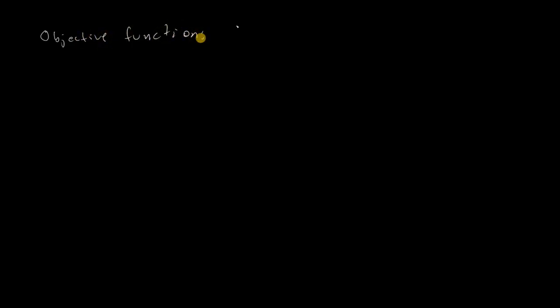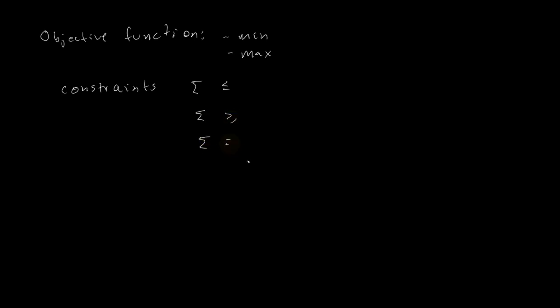When we have a linear program, we have an objective function that can be in the form of minimization or maximization. Then we have some constraints, and the constraints can be like a summation less than or equal to something, greater than or equal to something, or equal to something else. The variables in general can be greater than or equal to zero, less than or equal to zero, or unconstrained.